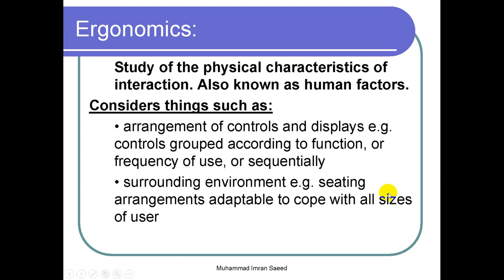Ergonomics considers things such as the arrangement of controls and displays. For example, controls are grouped according to function, frequency of use, or sequentially. Whenever you place controls on the user screen or GUI, you always try to provide ease to the user, so you arrange all the controls in a manner that the user can access them very easily.